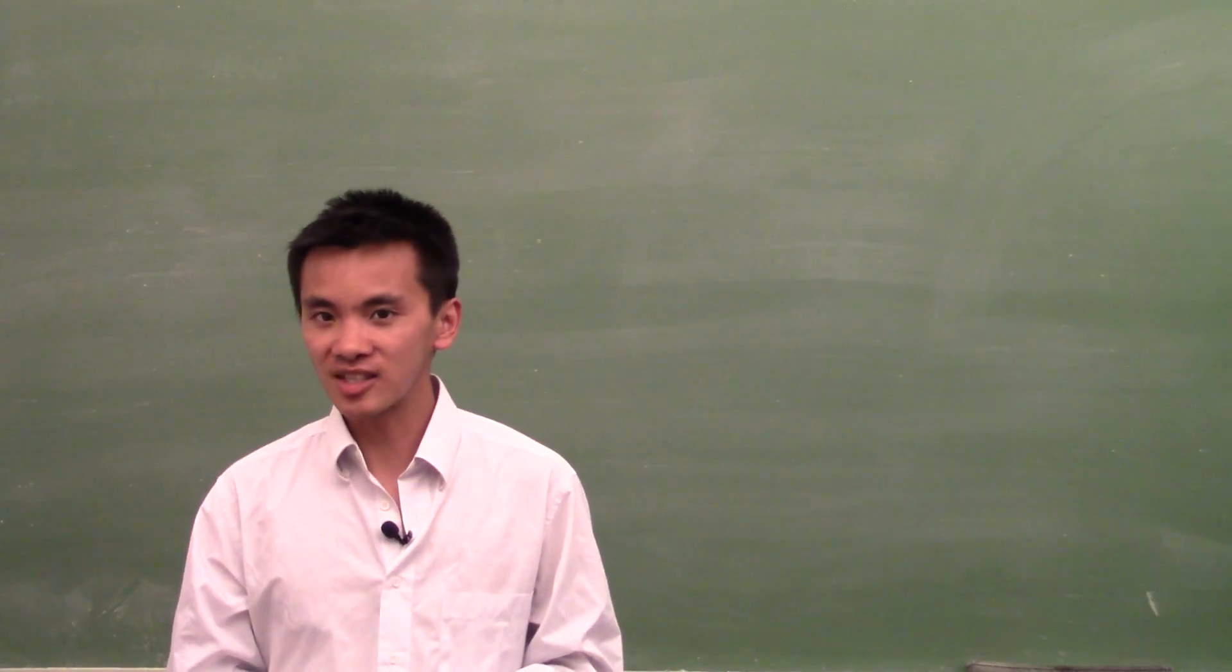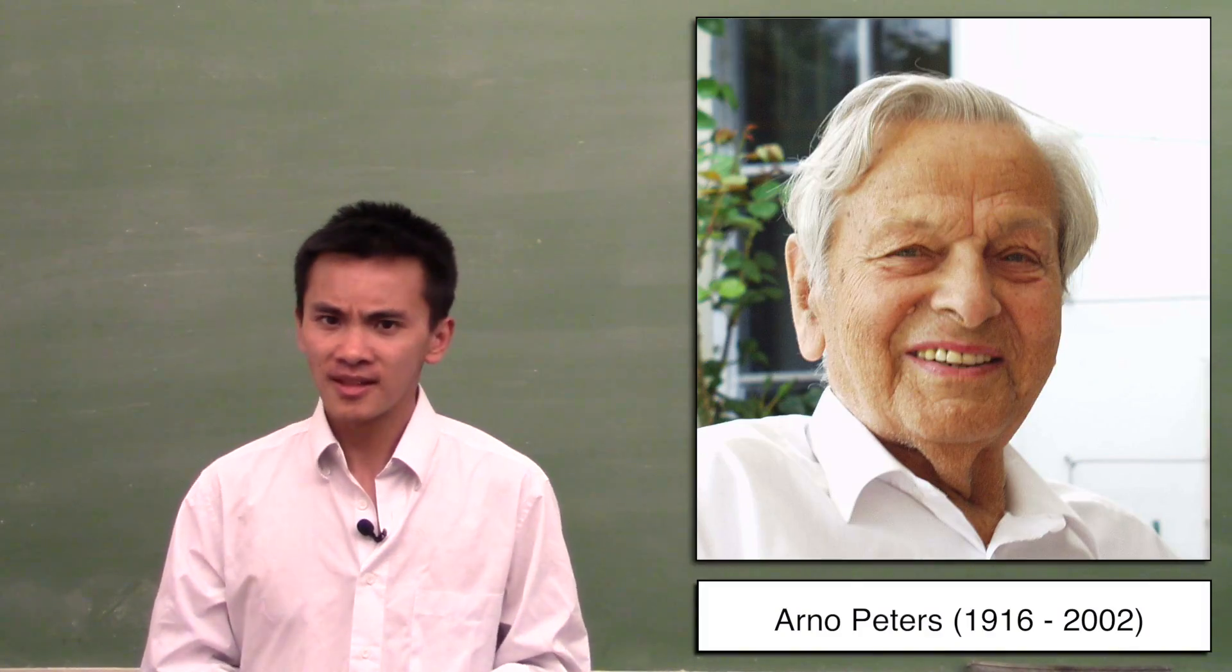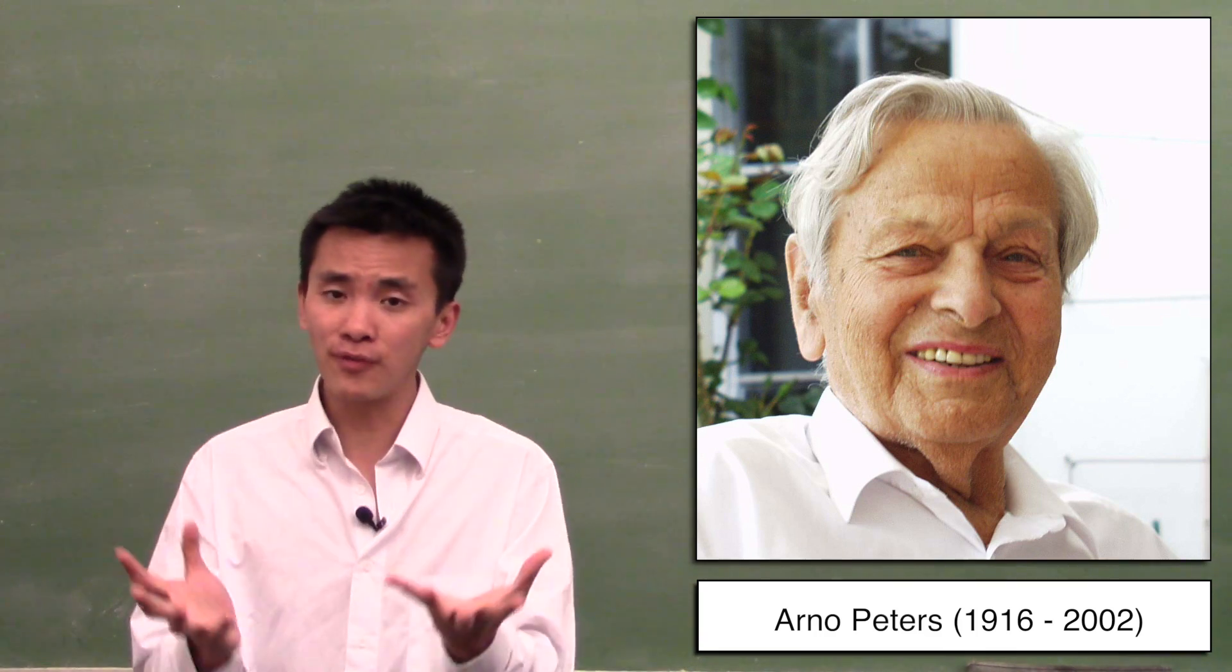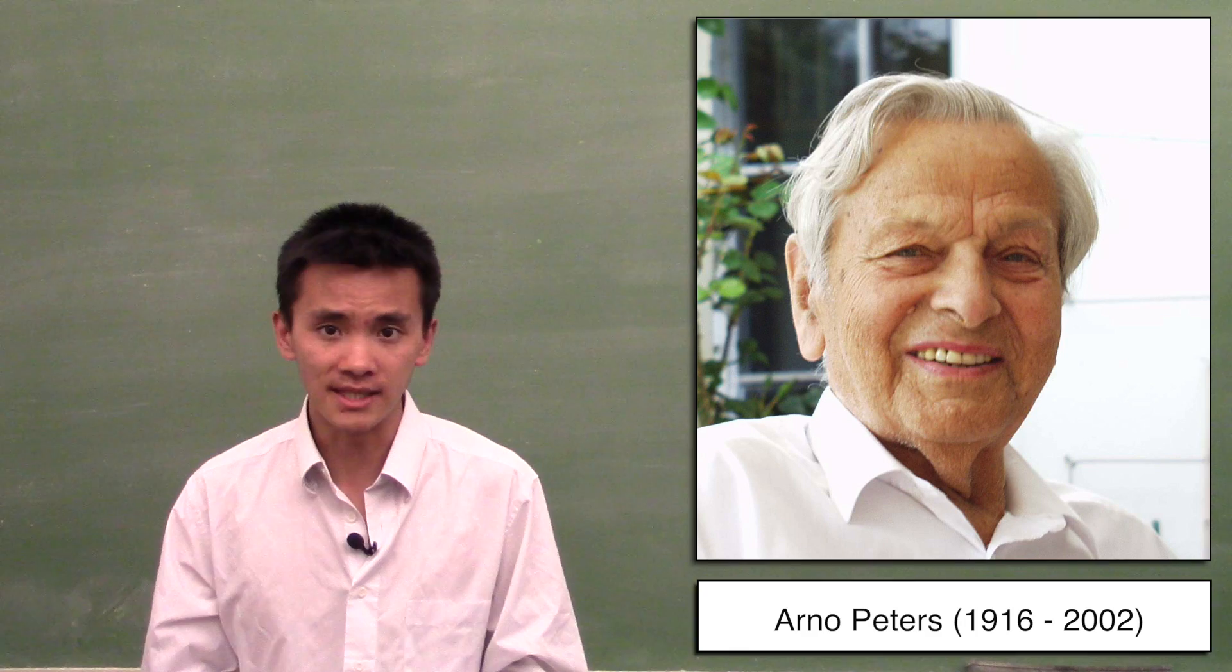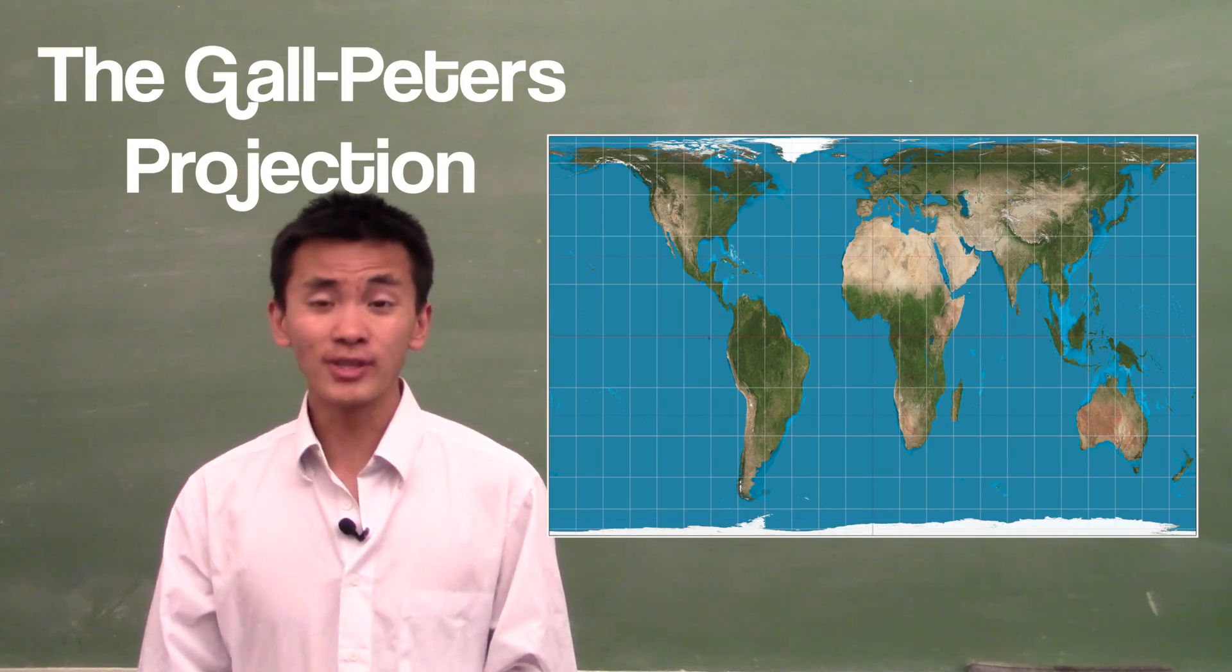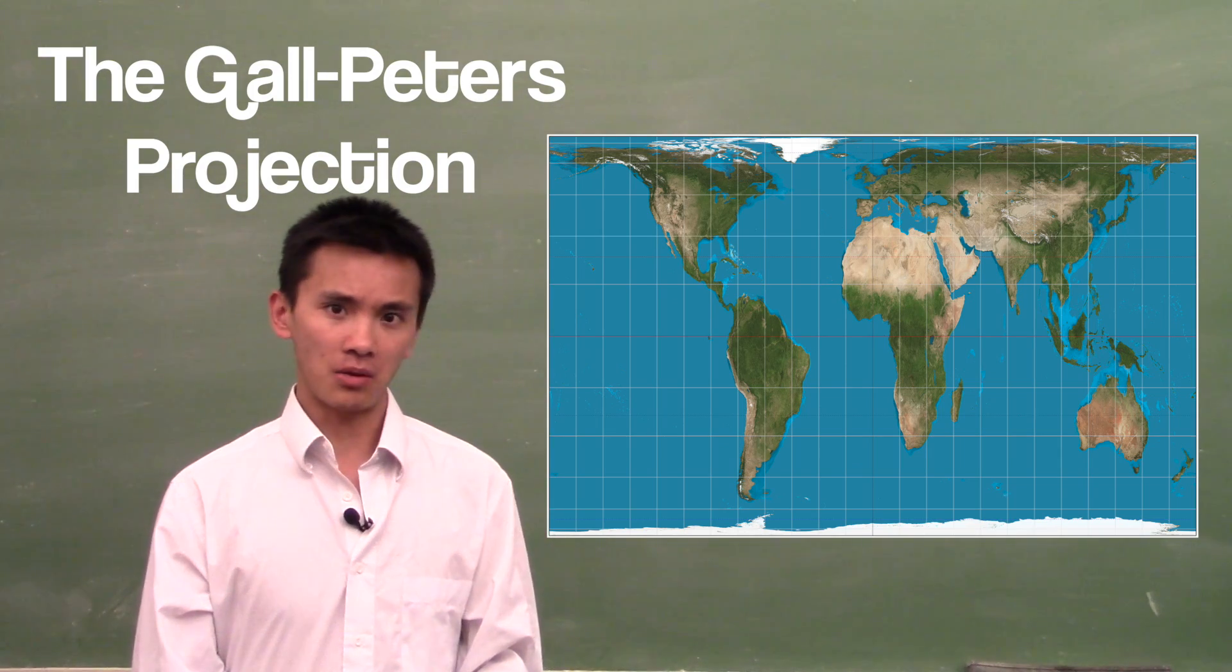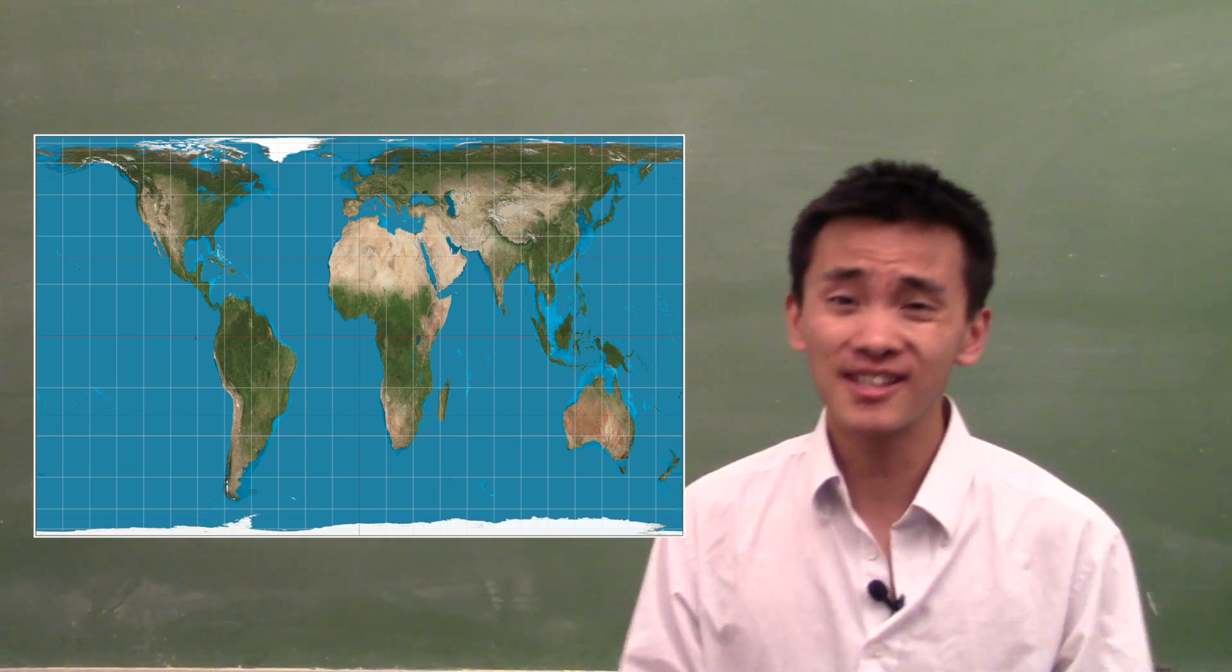So in the 1970s, a German historian named Arno Peters decided to change the map to make a map that is faithful with the actual sizes of the countries. We now call it the Gall-Peters projection, and you can see on this projection just how big Africa is and just how small Europe is.